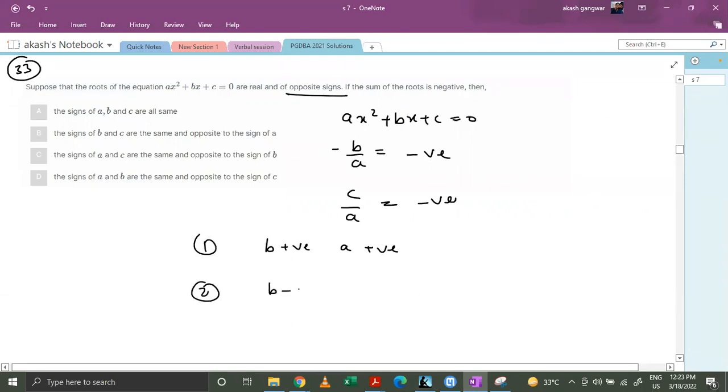Second case is b is negative and a is negative. Now if b and a are both positive, then c should be negative, because if this expression has to become negative, c has to be negative. And if both are negative, basically if a is negative, then c has to be positive. So both a and b have same signs, and c has the opposite sign. So option A is correct.